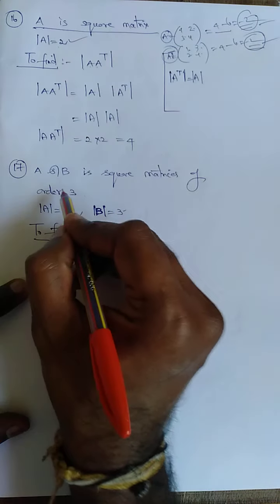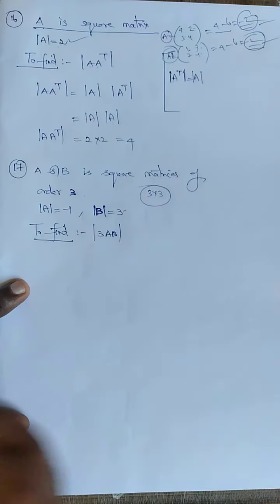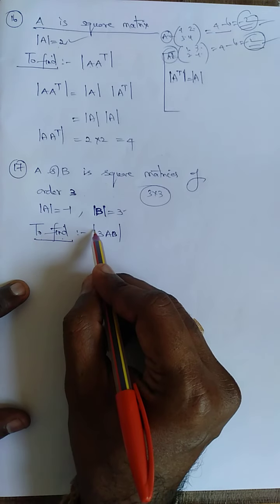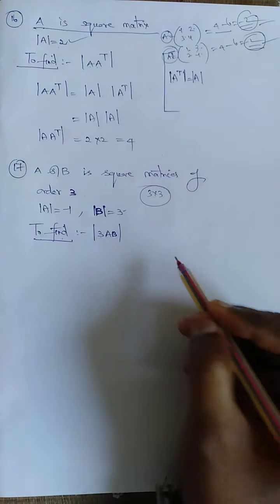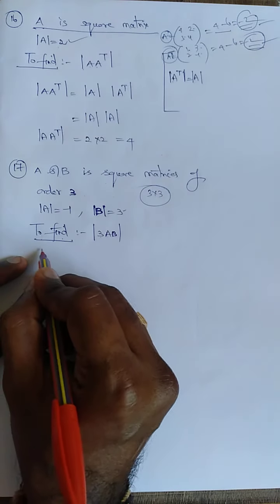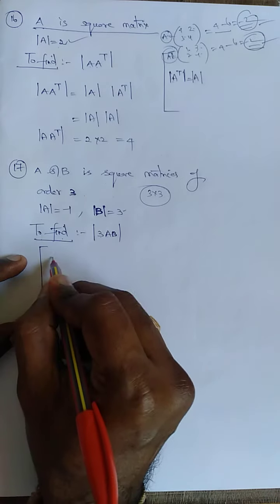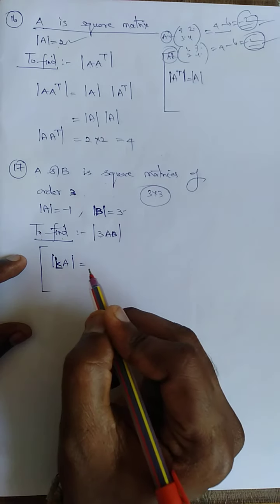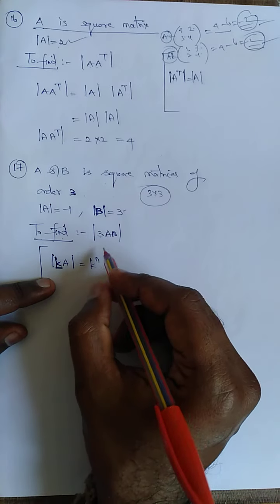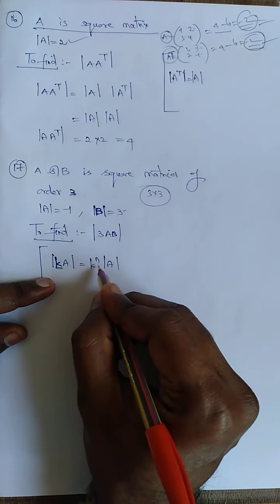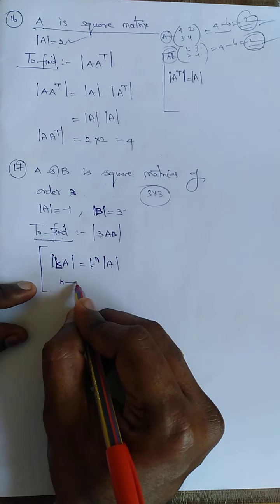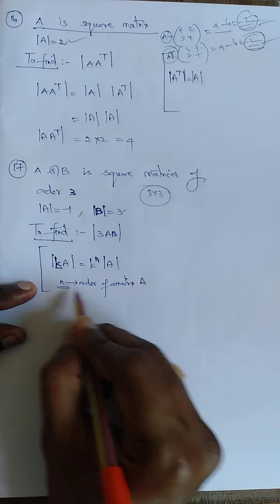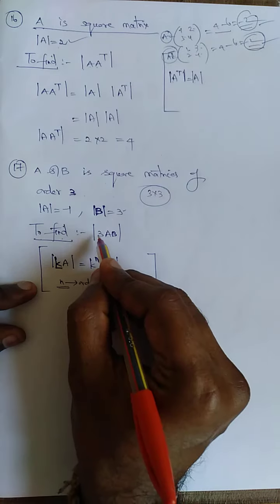17th sum: A and B are square matrices of order 3 — that is, 3×3. Determinant of A is minus 1, determinant of B is 3. I need to find determinant of 3AB. First, I need to use the formula: det(KA) = K^N × det(A), where K is a constant and N is the order of the matrix. Here N is 3.